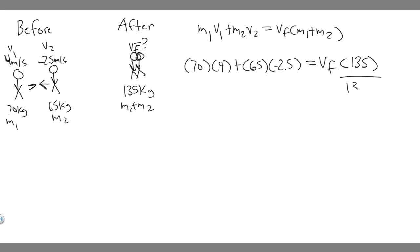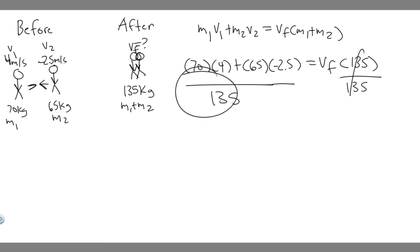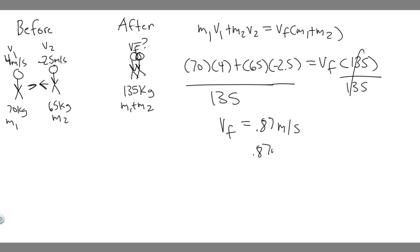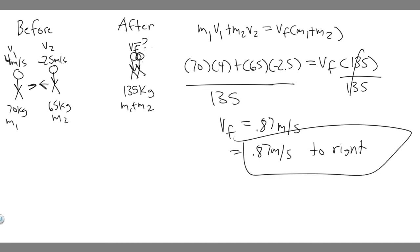Solving for V_final — divide by 135 — and plugging into a calculator: 70 × 4 plus 65 × (−2.5), divided by 135, gives 0.87 meters per second. Since the result is positive and we defined right as positive, the skaters move to the right at 0.87 meters per second after the collision.